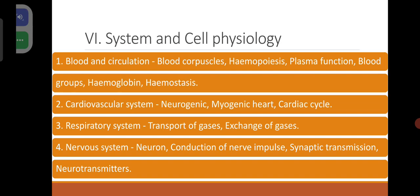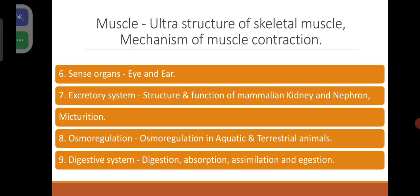About each and everything, we will try to prepare questionnaires. Muscle: ultrastructure of skeletal muscle, mechanism of muscle contraction. Sense organs: eye and ear. Excretory system: structure and function of mammalian kidney and nephron, micturition. Osmoregulation in aquatic and terrestrial animals. Digestive system: digestion, absorption, assimilation.